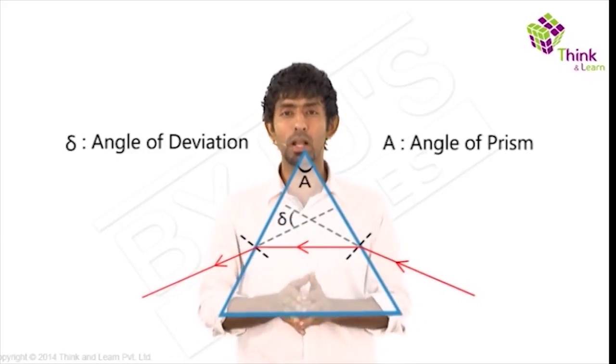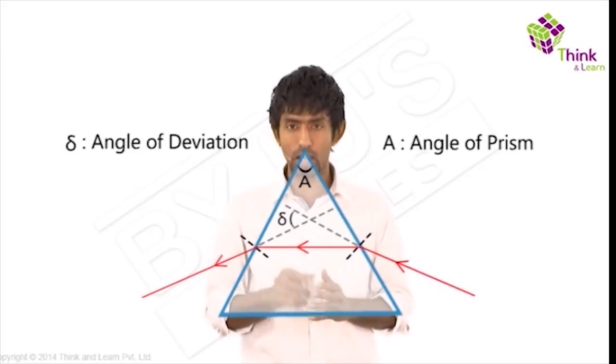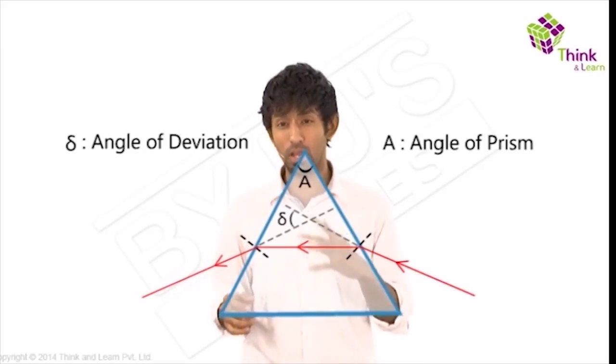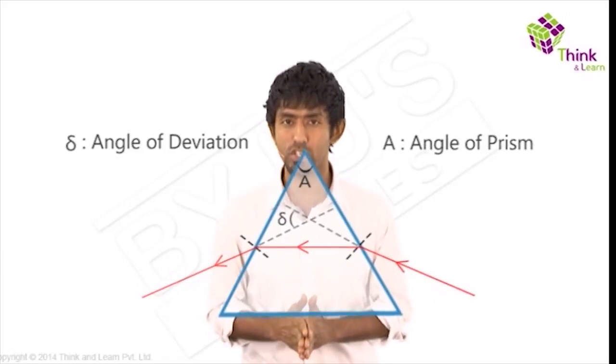So that little angle that you see is called the angle of the prism. And this angle between the incident ray and the final ray that comes out is called the angle of deviation.